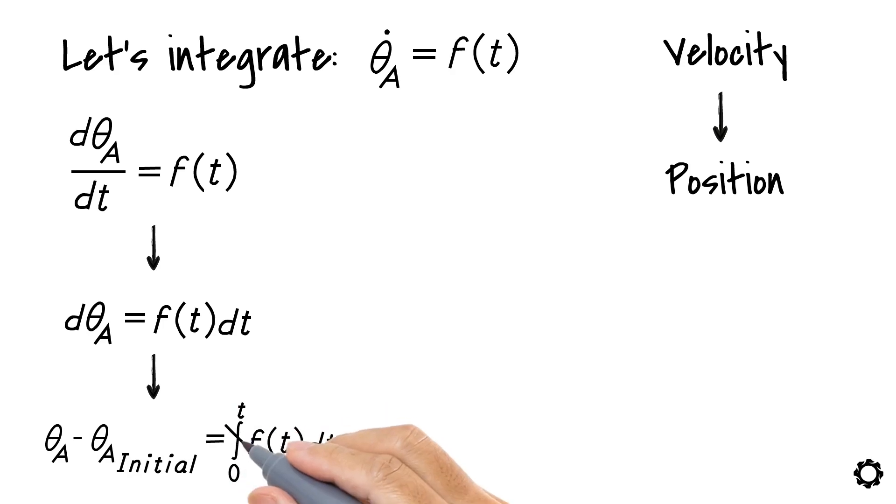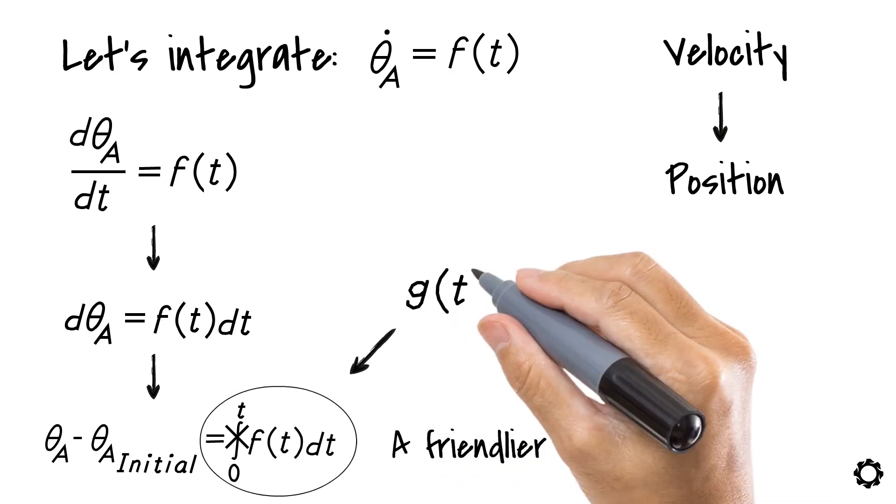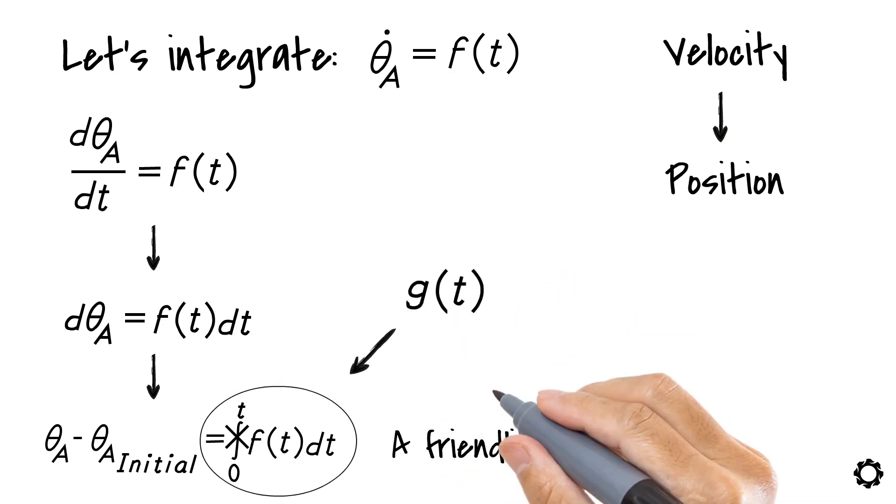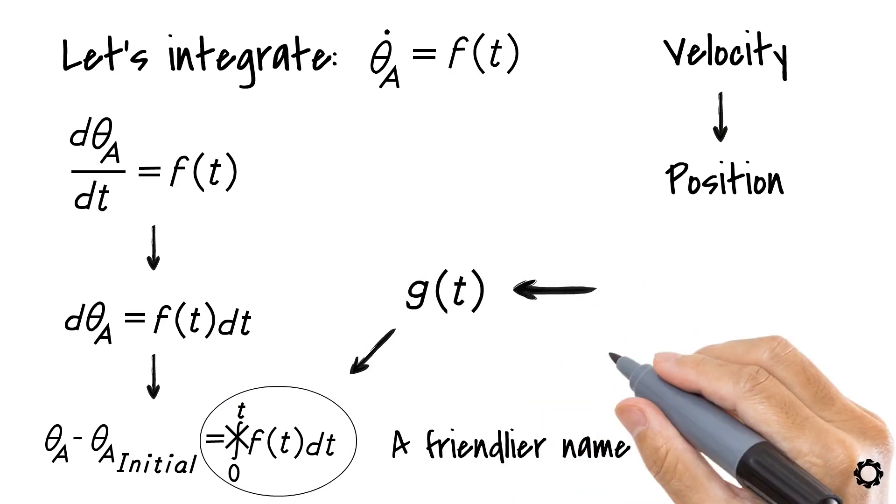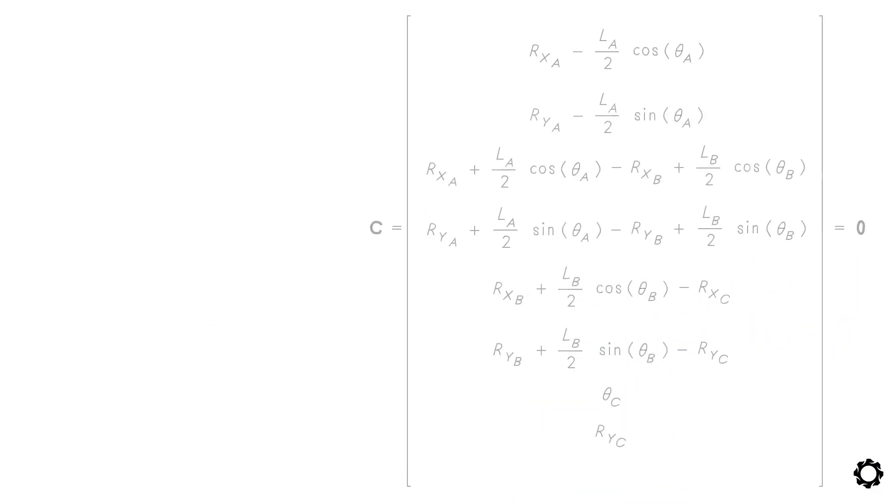To avoid carrying the integral symbol in all calculations, let's give a friendlier name to it. We are going to call it g of t. Finally, we can introduce our imposed motion as a constraint equation in our constraint vector.